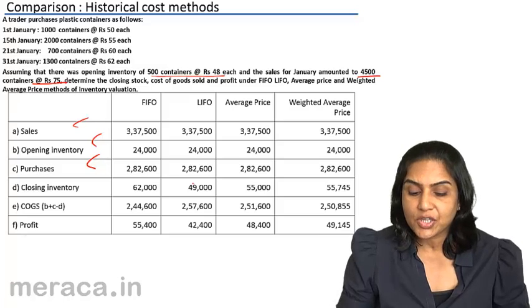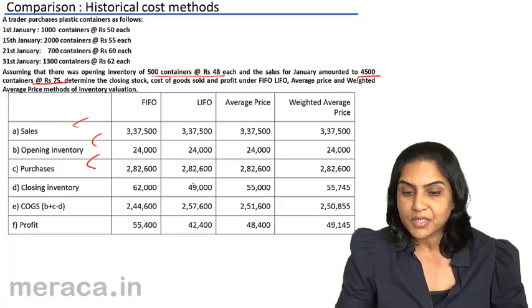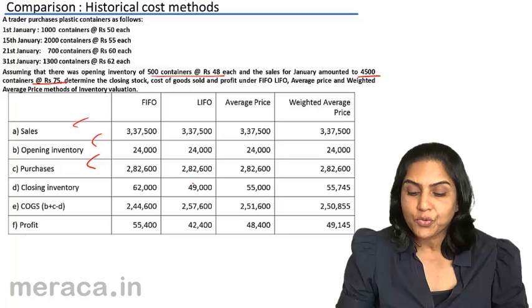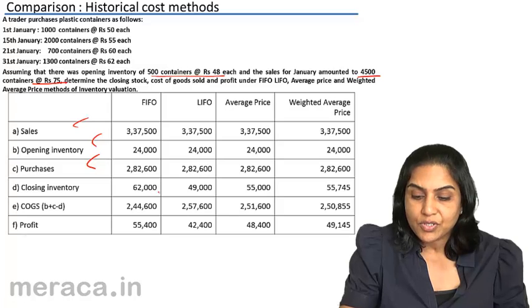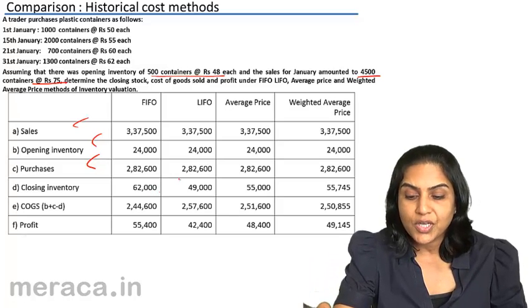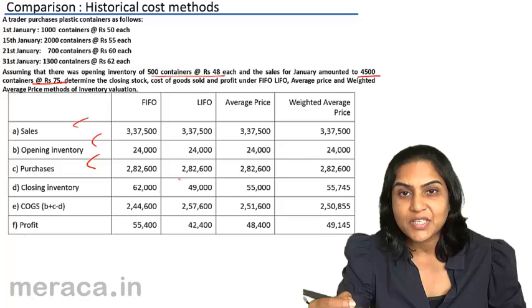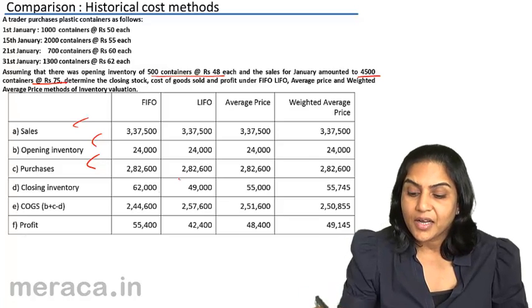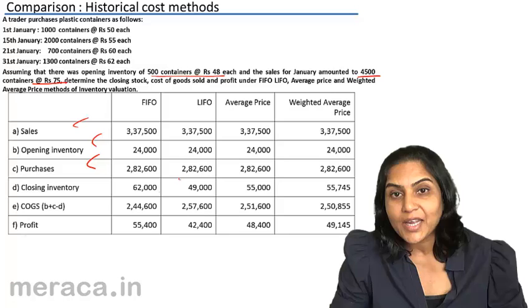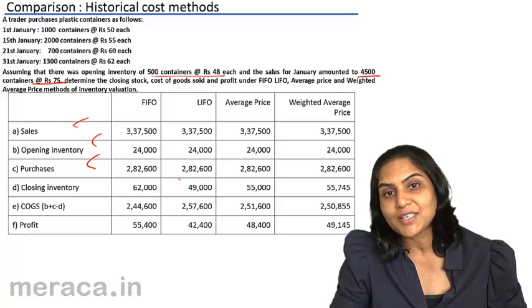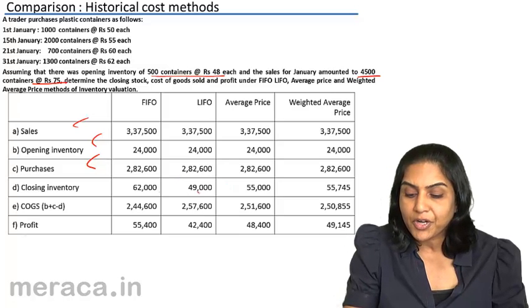However, there is a change in the closing inventory whether we follow FIFO, LIFO, Average Price or Weighted Average Price. You notice we have a different value of inventory in each of these methods. Under FIFO it is 62000. Under FIFO method, closing inventory consisted of the latest purchase prices — first in, first out. Under LIFO it was just the reverse, because goods which came in last were issued first and therefore the inventory consisted of the goods which were purchased earliest. The inventory under LIFO method in this example was only 49000.